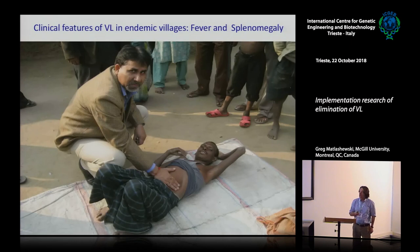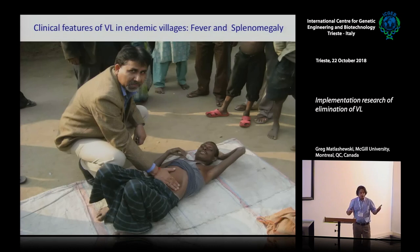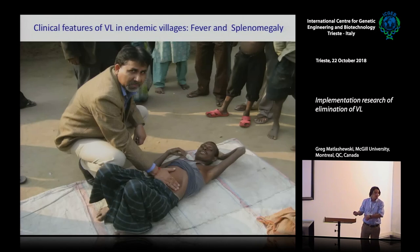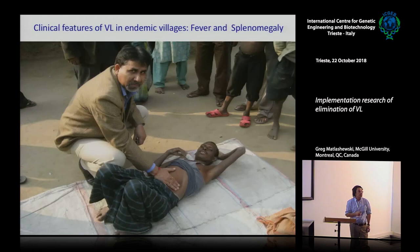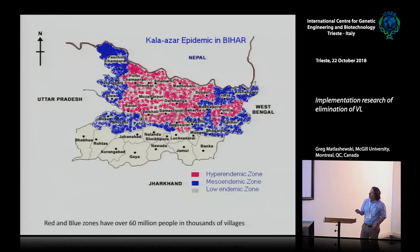One approach — not very practical — is what Dr. Das from RMRI demonstrated: going into a village, having everyone with fever come forward, testing for splenomegaly, doing the RK39 test, and treating those positive. But this is absolutely not practical for thousands and thousands of villages. These are the highly endemic areas in Bihar — red and blue zones — with over 60 million people just in this area, and within these districts there are thousands of villages.